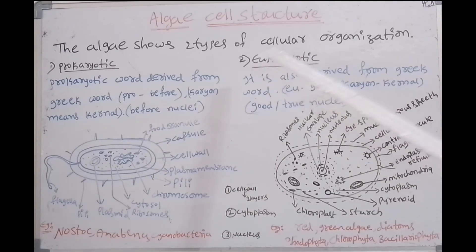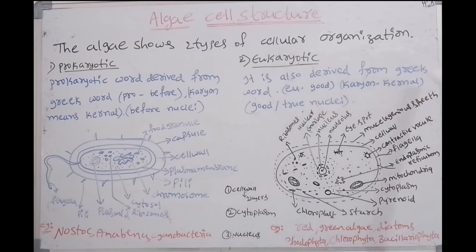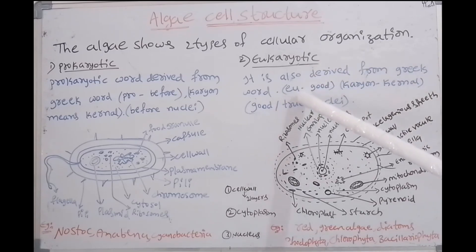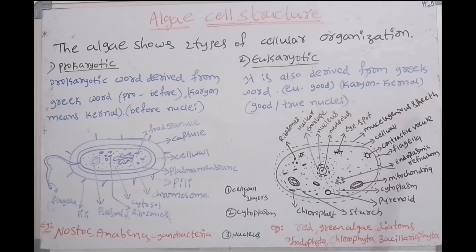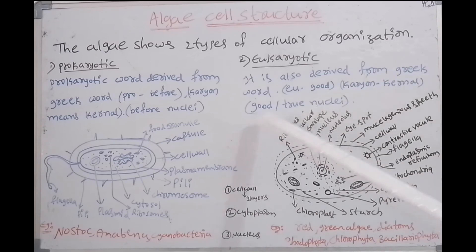Next one, eukaryotic. It is also derived from a Greek word, two words: 'eu' means good, 'karyan' means kernel. The full meaning is 'good or true nuclei'.